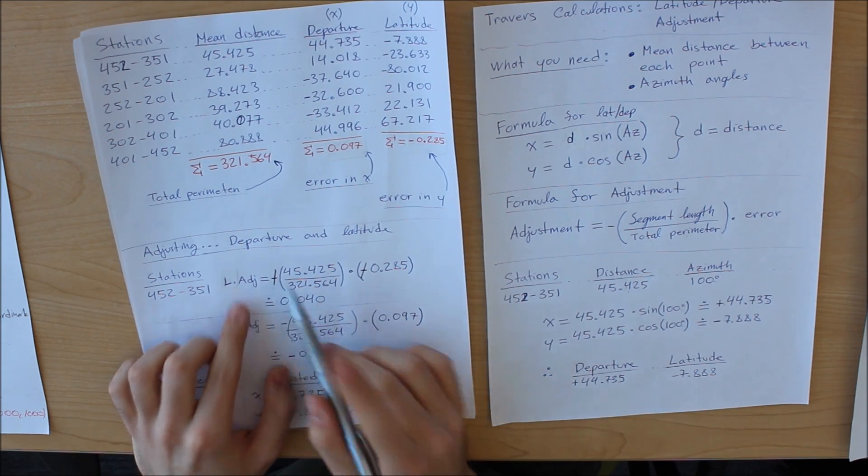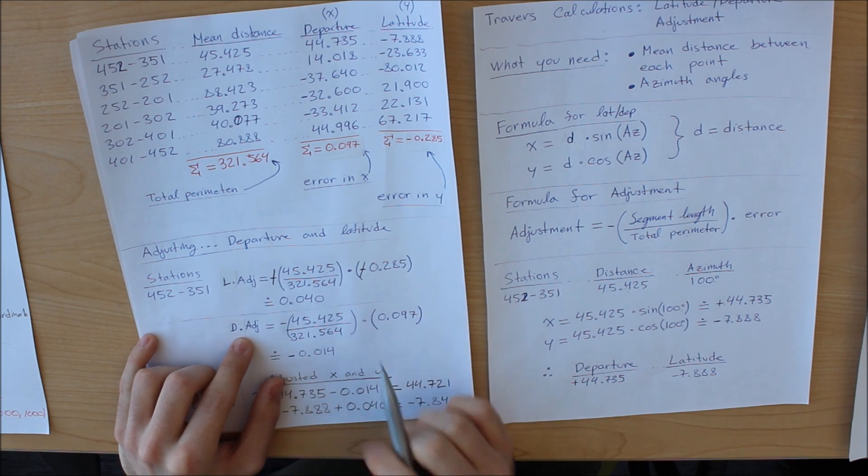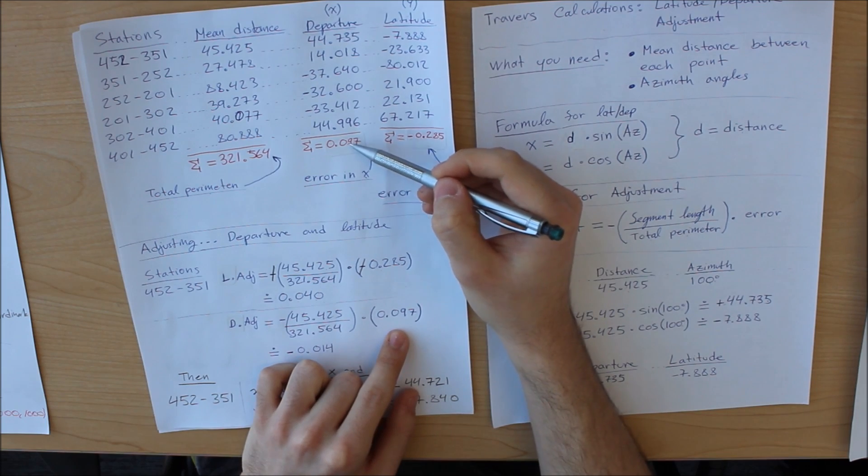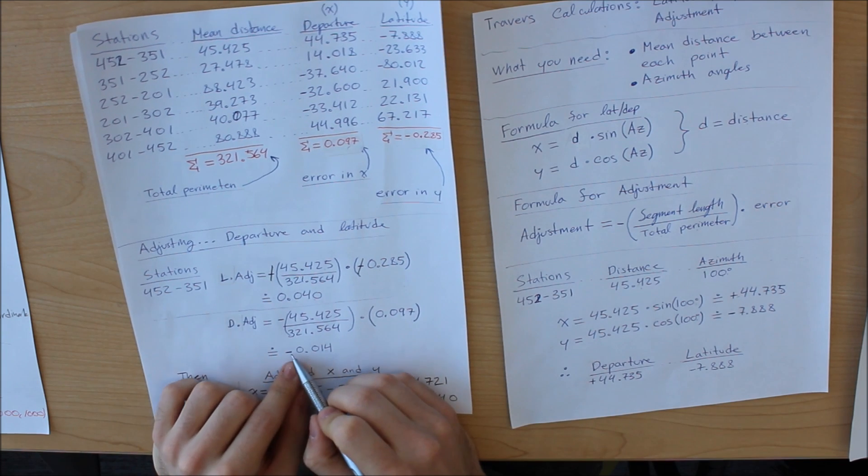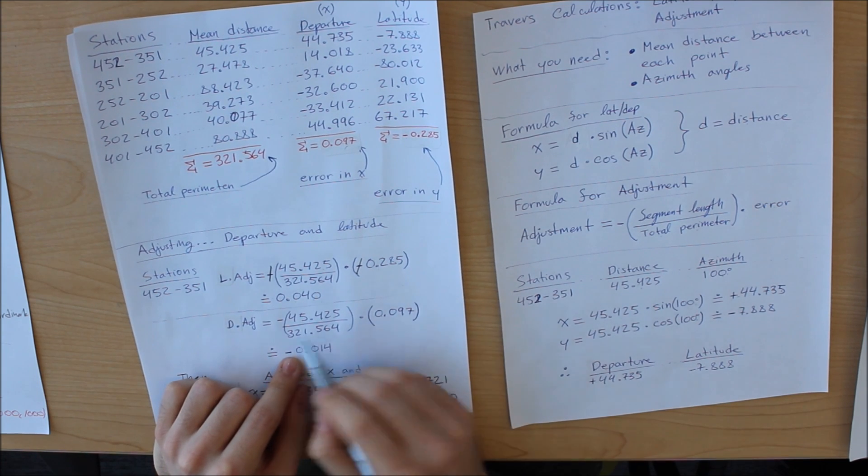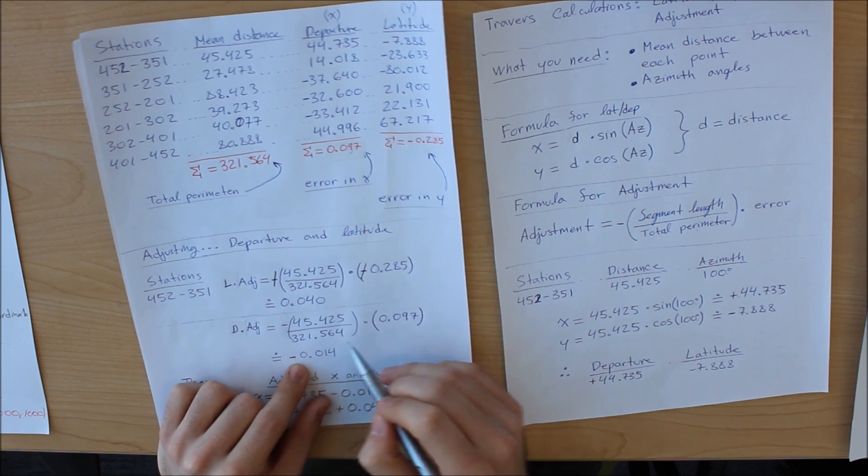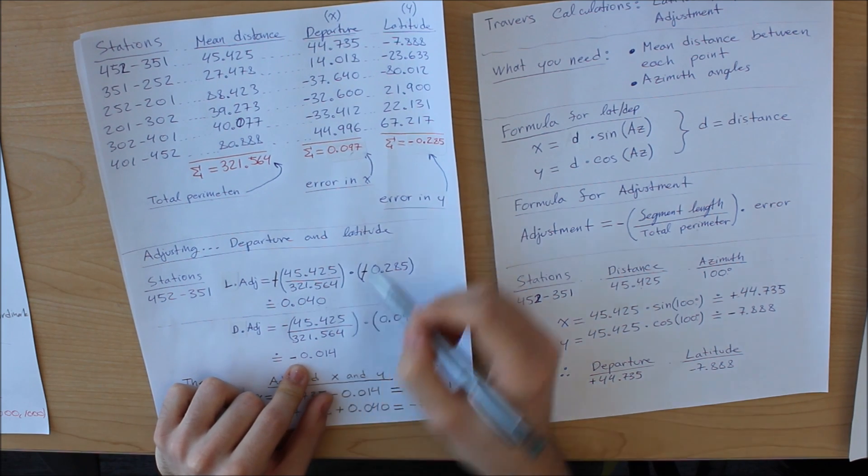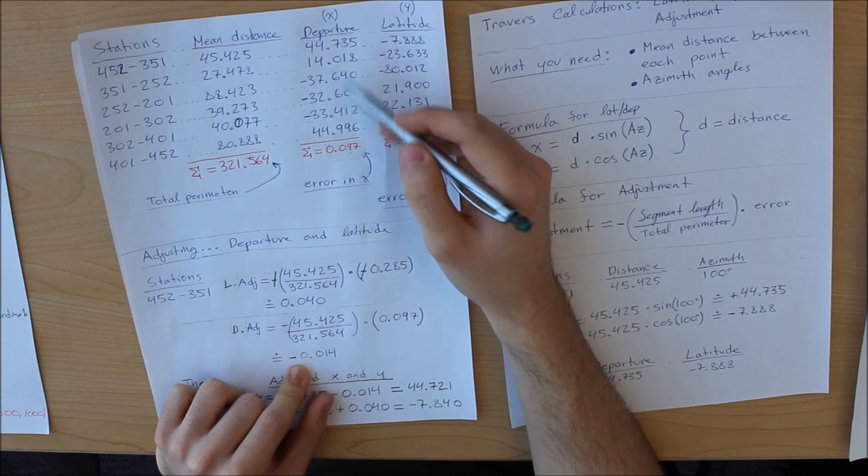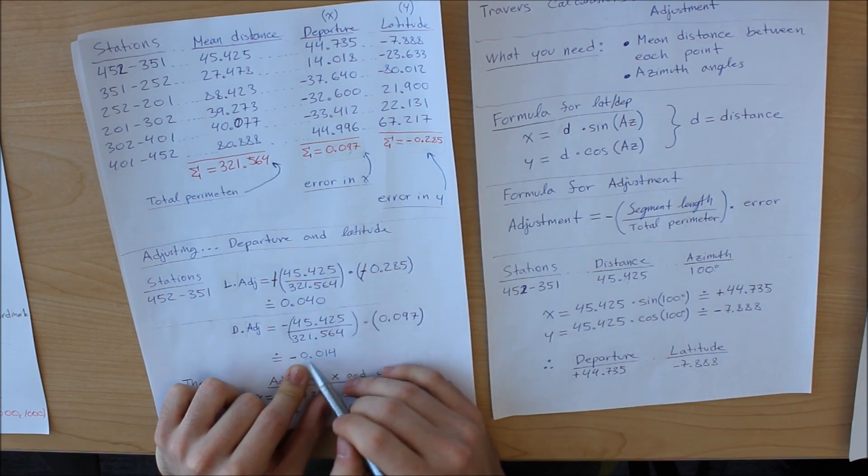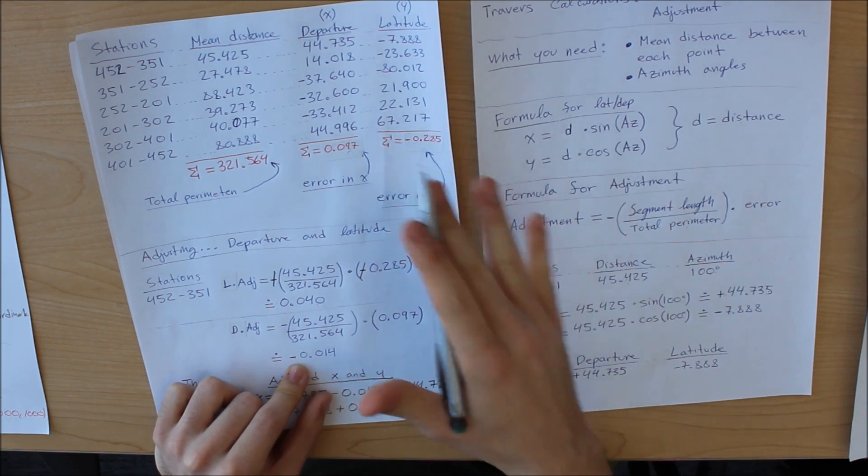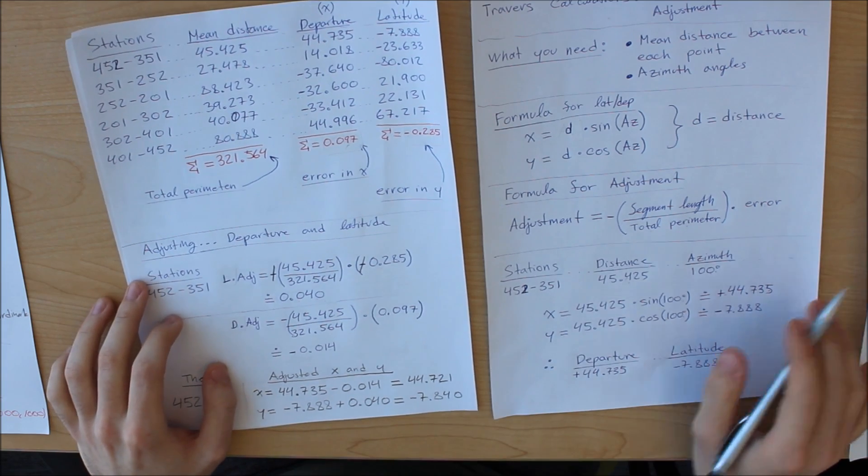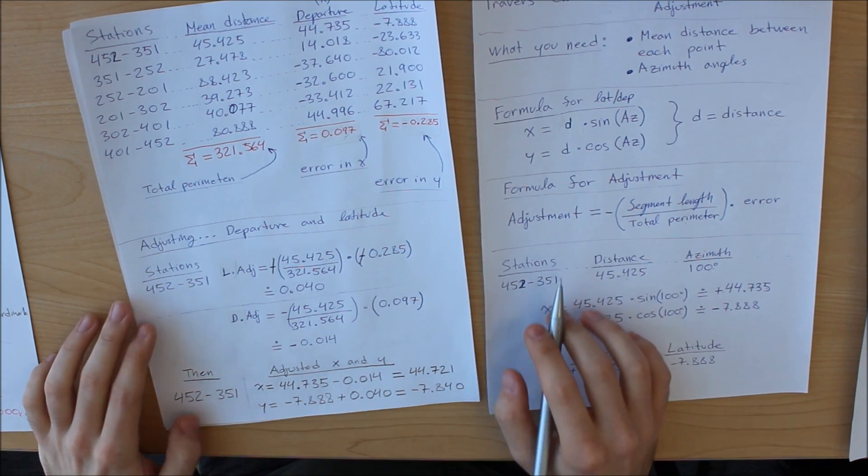Now this was for the latitude. Now adjusting for the departure, same exact formula. We plug in our numbers and we multiply it by the departure this time. The error in the departure, that is. This time, take note, we get a negative result. There is no negative here. The negatives do not cancel. We get a negative result. With this negative result, I will add it back to the departure. And that makes sense, because it is a negative. Our error is a positive number. We want to bring it down, so we must subtract down to a positive.